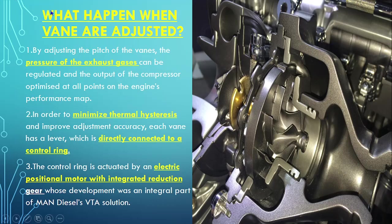By adjusting the pitch of the vane, the pressure of exhaust gas can be regulated and the output of the compressor optimized at all points on the engine performance map. By adjusting the pitch of the vane we are adjusting the pressure of exhaust gas. If we constrict more, the pressure will be higher and impingement on the turbine blade will be greater. If we open more, there will be less impingement on the turbine blade.